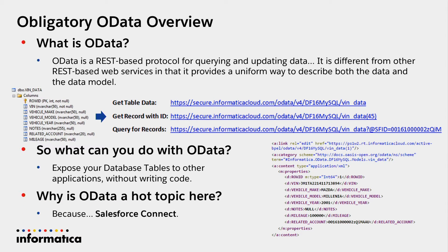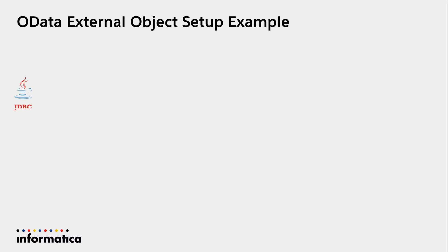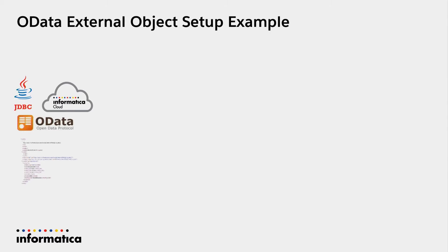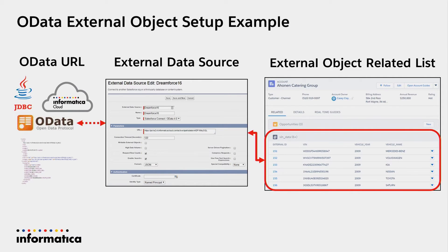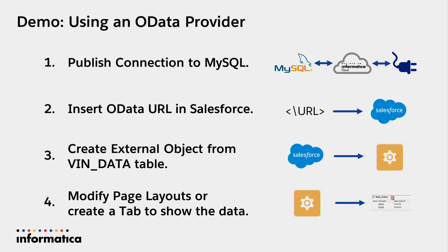Salesforce Connect makes OData one of the easiest ways to expose external data to a Salesforce user. The quick demo we're going to go through right now involves: taking a database source, generating an OData URL from it, creating an external data source in Salesforce, and then putting that external object related list onto your page layout. We're going to use a MySQL database that, for the purposes of this discussion, is behind the firewall. We'll use our secure agent technology to get behind the firewall, publish it as an OData endpoint, and visualize that data on the record — all in just a couple of minutes.